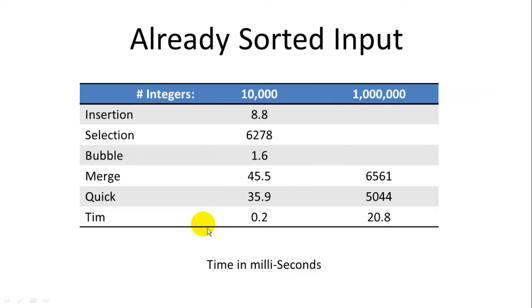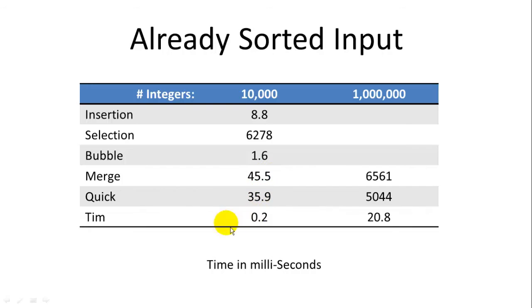Already sorted input may seem unusual, but in practice it's not uncommon for input to be already sorted or mostly sorted. Insertion sort and bubble sort have checks to see if items are already sorted — if you make a pass through the data with no swaps, it'll exit the loop. So insertion and bubble sort are very fast for this case, whereas selection sort gives similar performance to unsorted input. Merge and quick sort also perform similarly to unsorted input. TIM sort is exceptionally fast, with only 20 milliseconds for up to a million records.